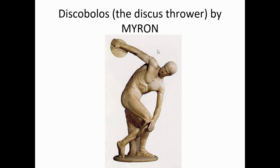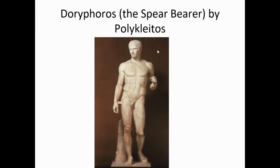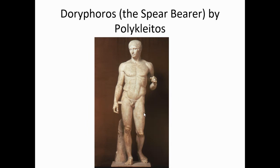Next is Myron, famous for the Discobolus — the discus thrower. Then you have Polykleitos, famous for the spear-bearer or Doryphoros. This was known as the canon, recognized as one of the most model sculptures because it shows ideal proportionality and the contrapposto stance, where all the weight is thrown onto one foot. You can tell this is a Roman copy of a Greek original — Greek originals were in bronze, but Roman marble copies survive. You can always tell by the unsightly little struts, since marble's weight alone would cause the arm to break off.